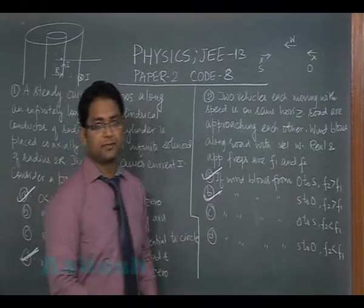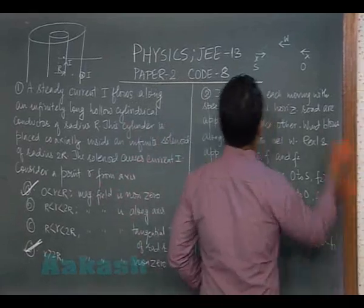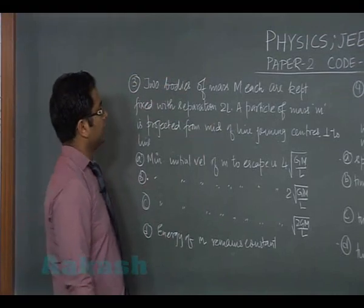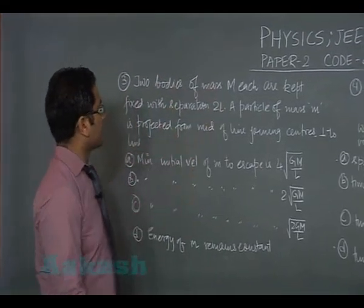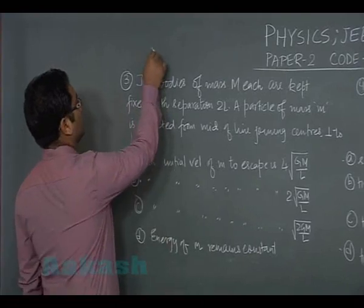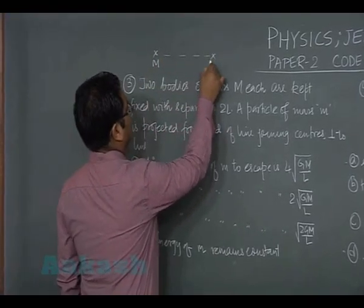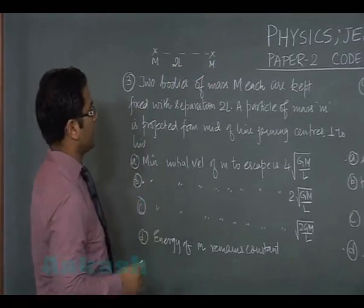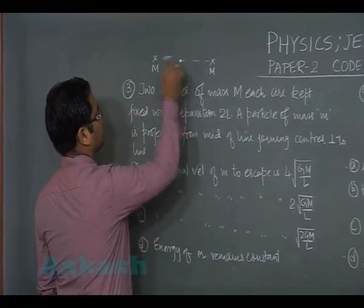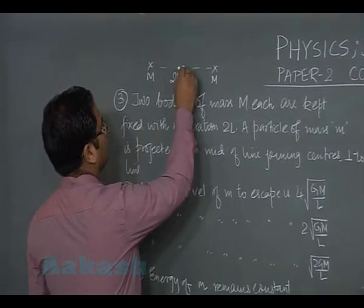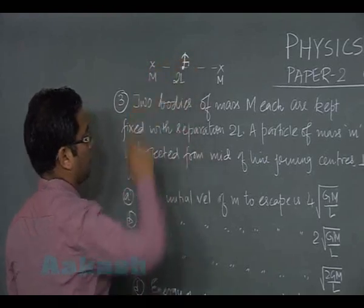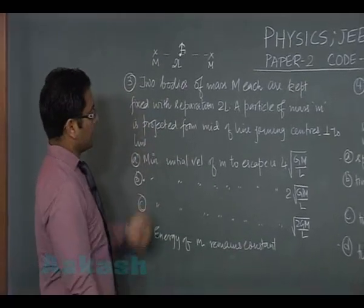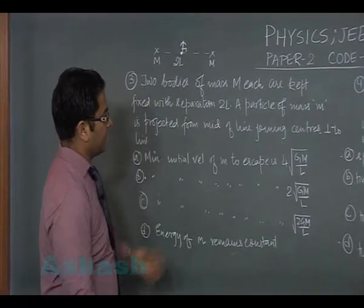In the same manner, if the wind blows from source to observer, what gets added is the speed of sound - you get a new value of speed of sound. But the bottom line is source and observer are approaching, therefore f2 would be greater than f1. Now we'll move to question number three. Two bodies of mass m each are kept fixed with separation 2l. That means m is here, m is here, the separation is 2l. A particle of mass m is projected perpendicular from the mid-point of the line joining the centers.